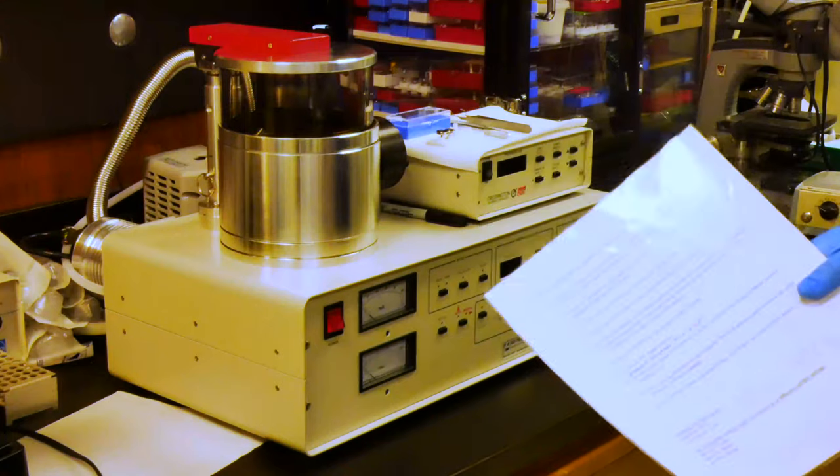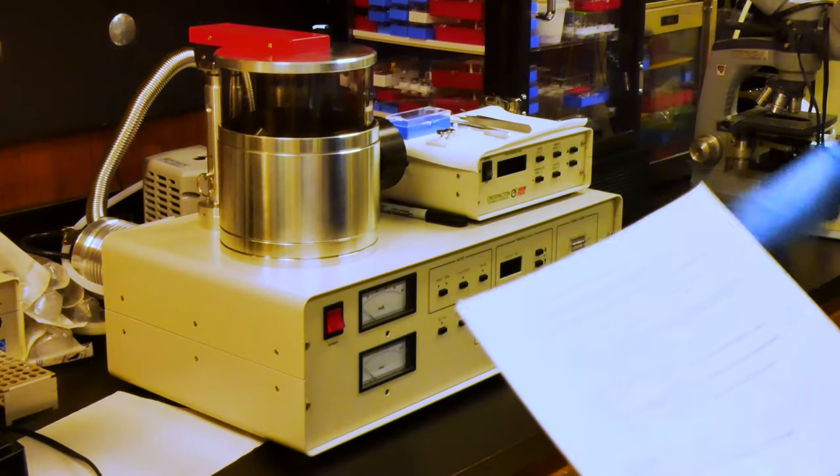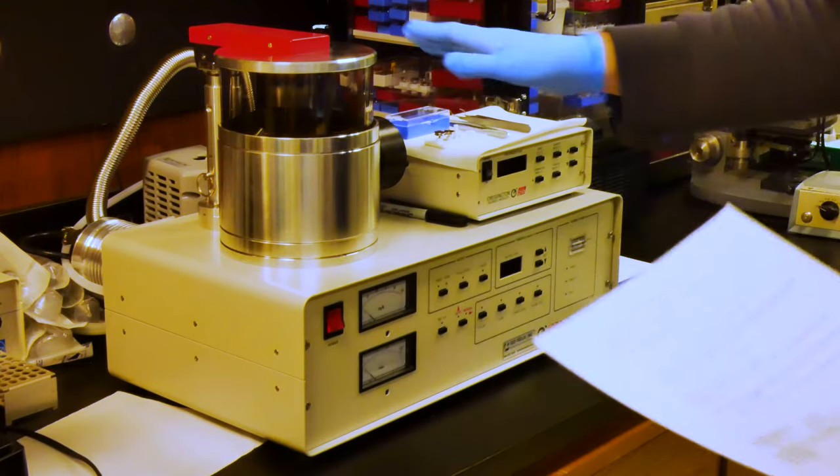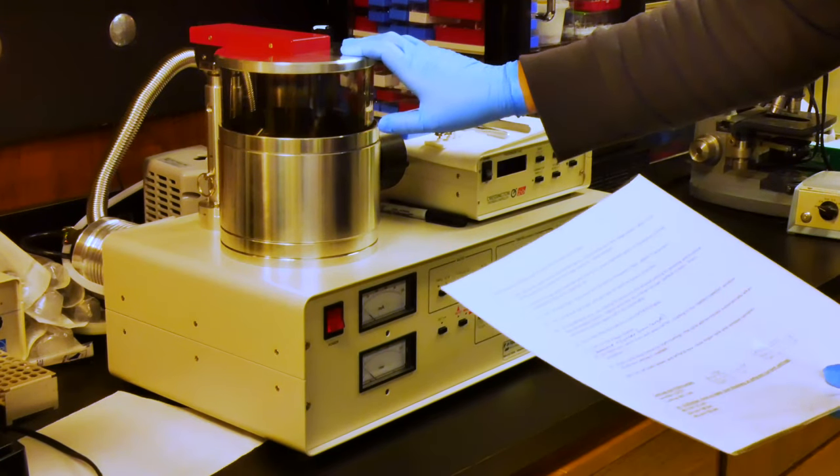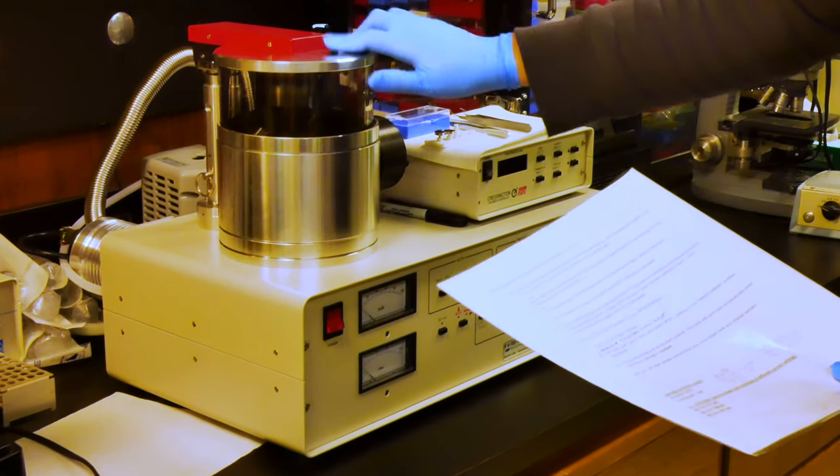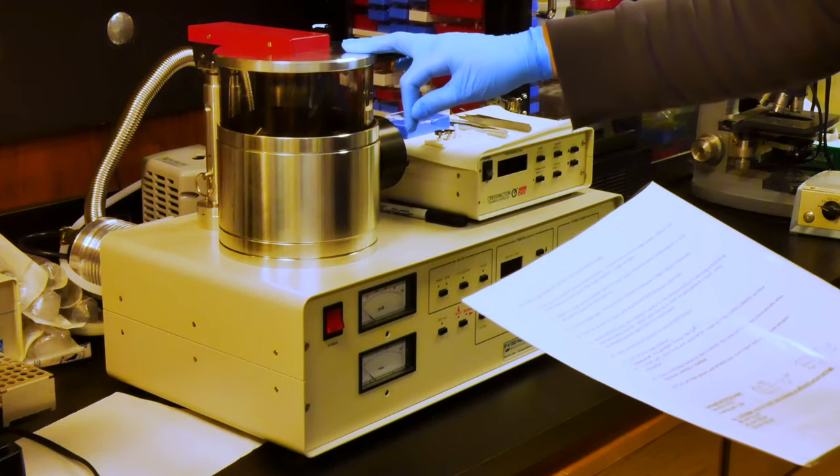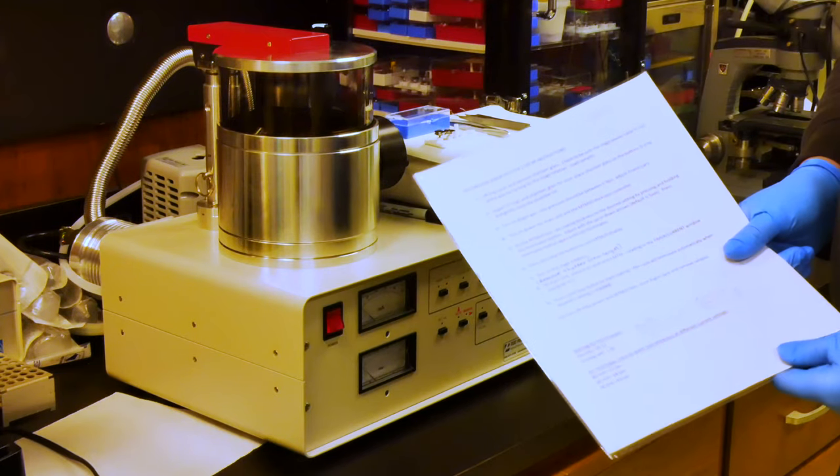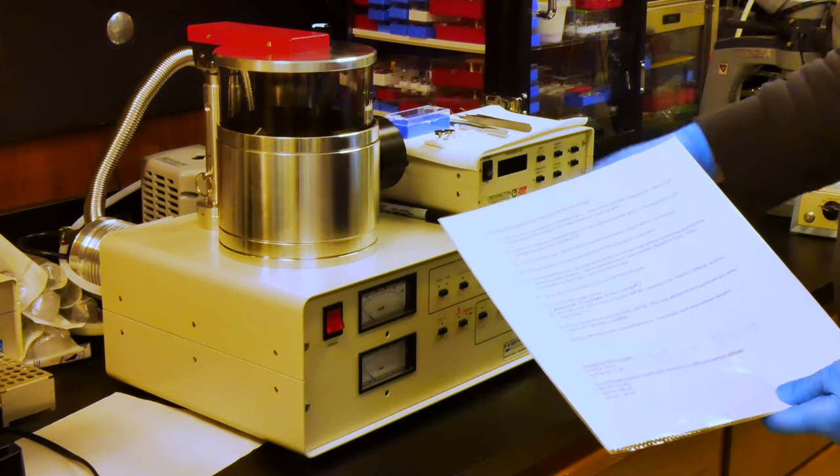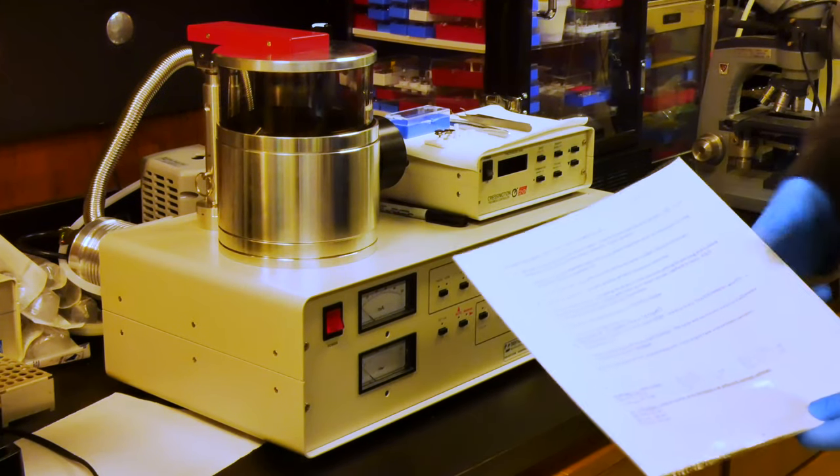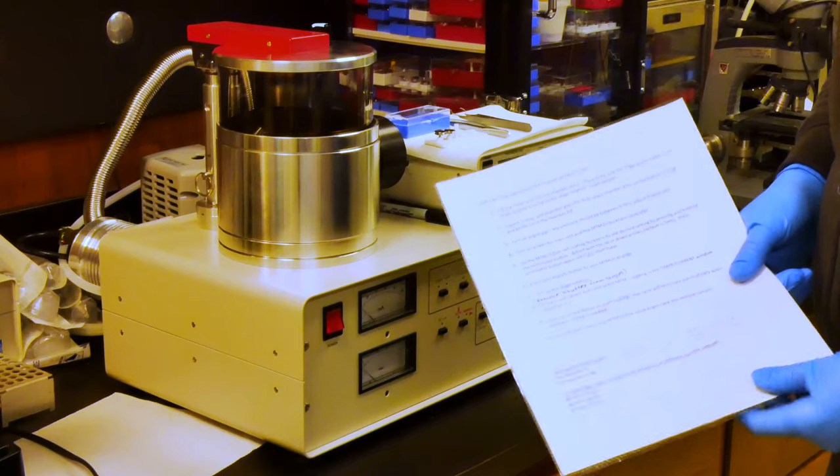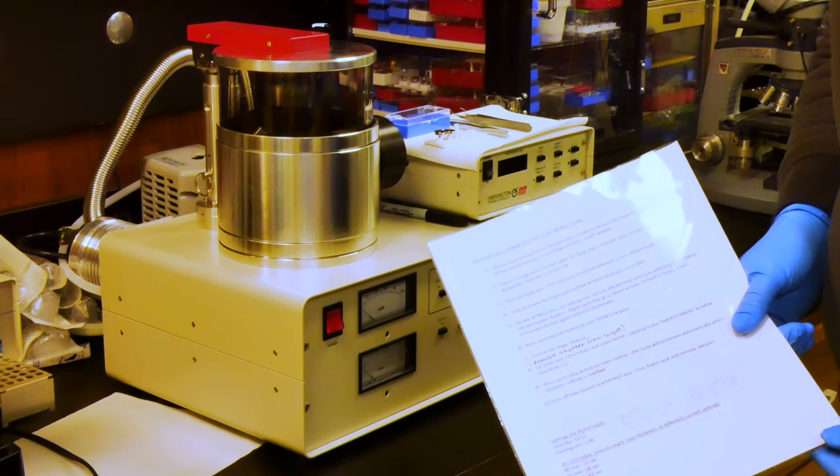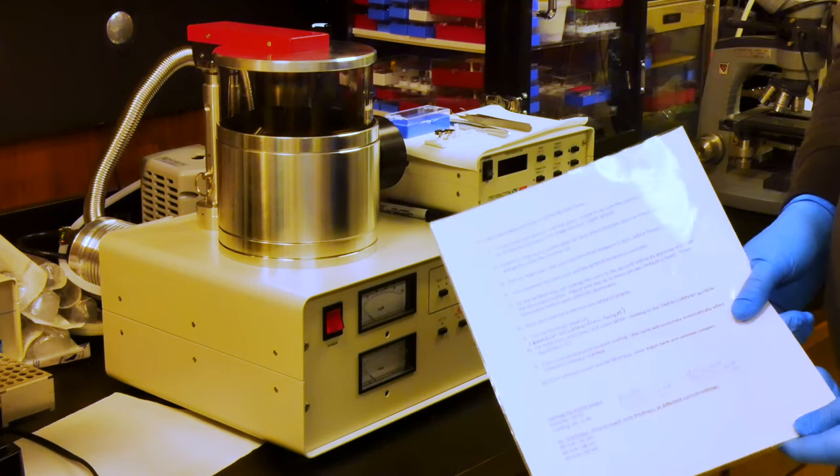To operate the Cressington sputter coater, we have samples that have been mounted that are now ready to be coated. Currently we are using a 60-40 gold palladium target that will sputter the metal onto the sample. That target can be exchanged. We also have a chromium one, but there are some additional modifications to the instrument that need to be made in order to exchange, and the exchange is also a bit of a process. Those other features would either be discussed one-on-one or will be followed up with an additional video training.